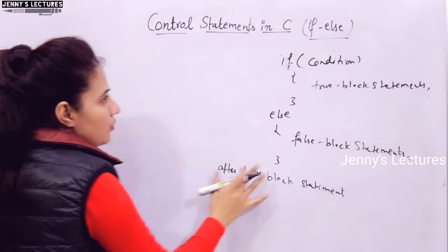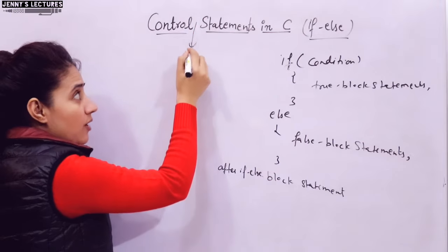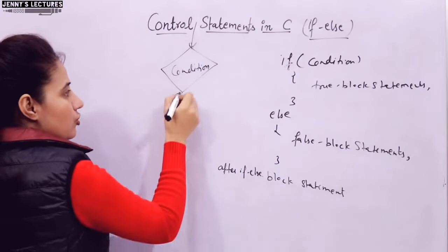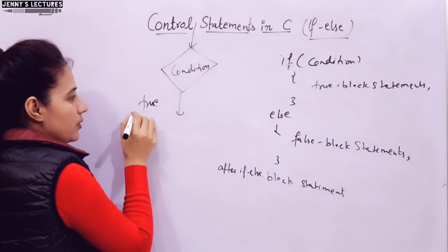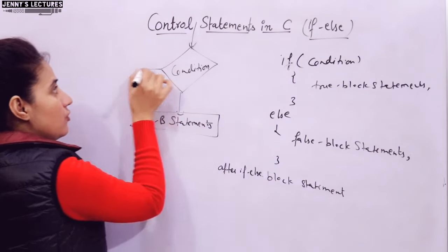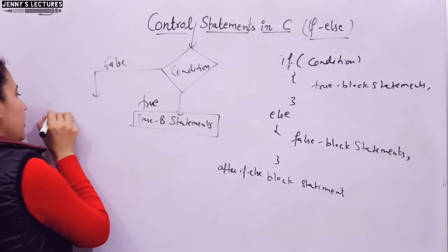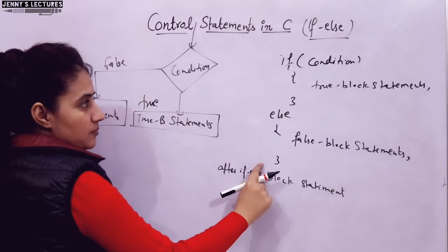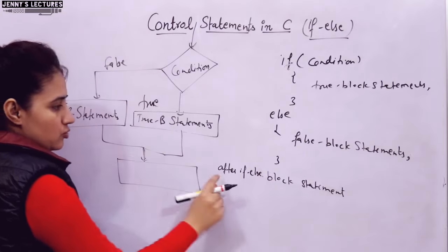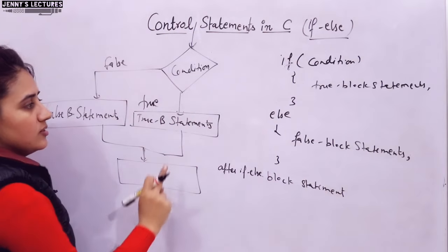Using a flowchart to show the working of if-else: execution flows sequentially until an if-else block is encountered. If the condition is true, the true block statements execute. If the condition is false, control goes to the else block and the false block statements execute. After either block, the after-if-else statements execute in both cases.